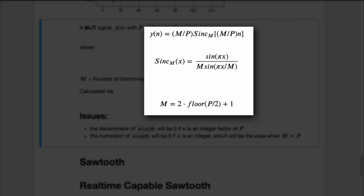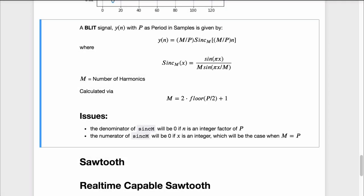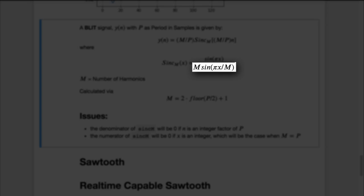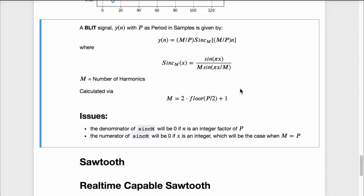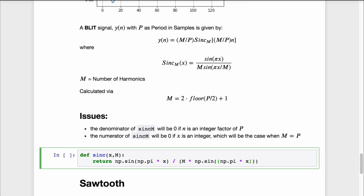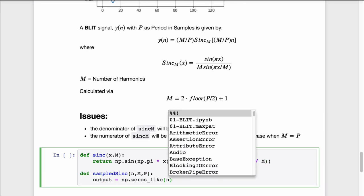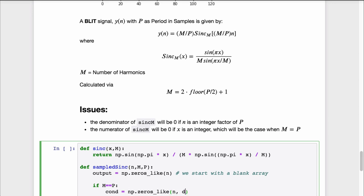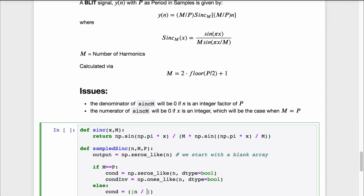I don't want to delve too far into the math here. Let's just say that a BLIT is defined by these three formulas. Y of n is the sampled BLIT displayed as a discrete summation formula, where sinc_m is the digital sinc function with m harmonics. Now we have two edge cases to cover. The denominator of sinc_m will be zero if n is an integer factor of p, and the numerator of sinc_m will be zero if x is an integer, which will be the case if m equals p. We have to care for these cases by slightly shifting p, otherwise it will lead to instabilities in the generated waveforms.